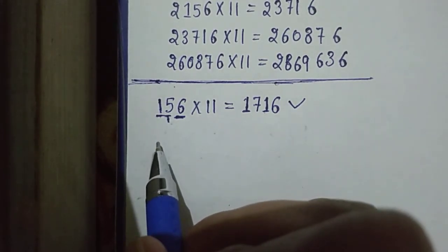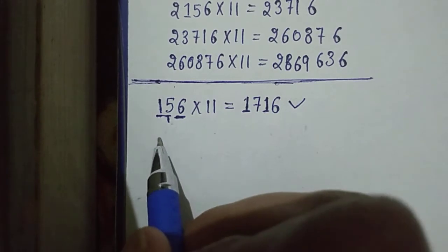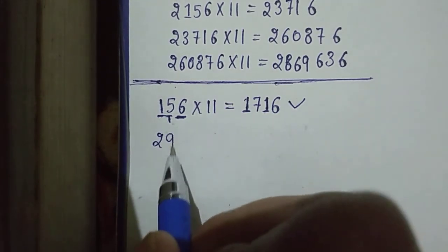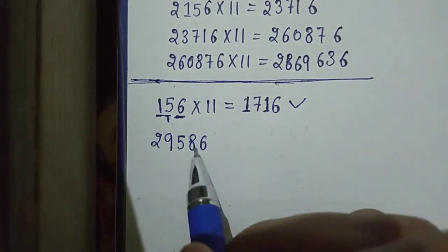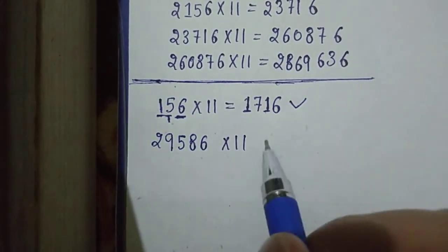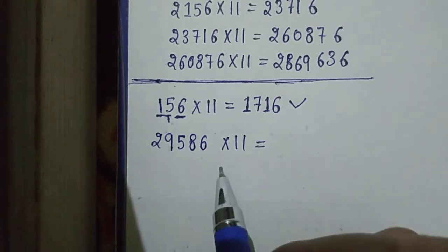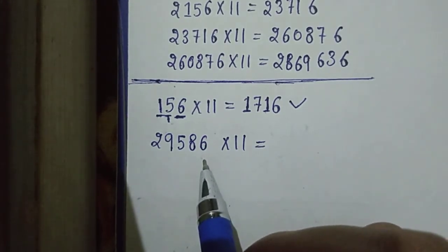Here we have a 5 digit number that is 29586. We have to multiply it by 11. So, first of all, in the first step, we have to take the last term of this number that is 6 and put it at here as it is.